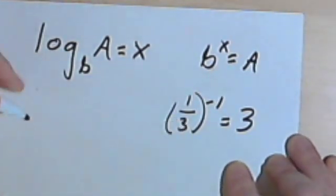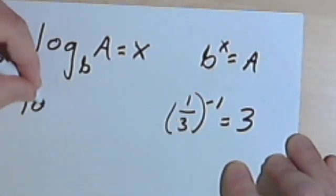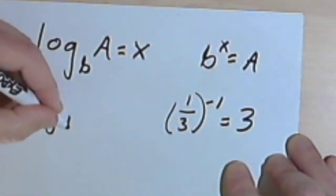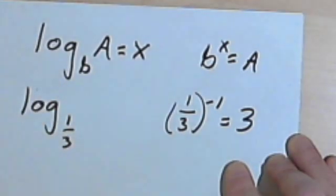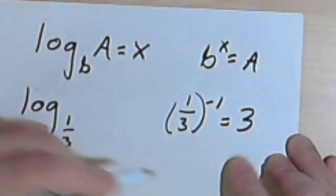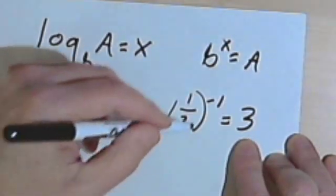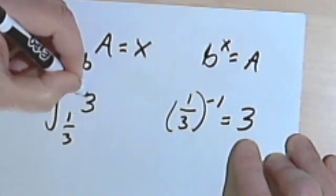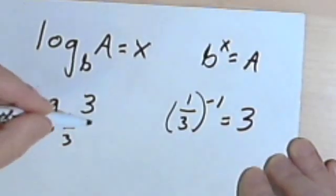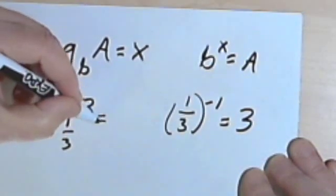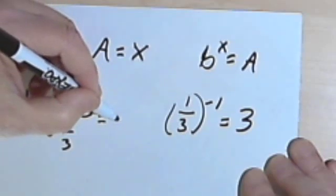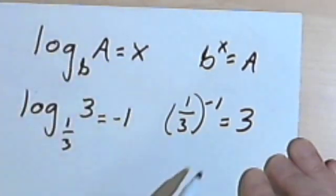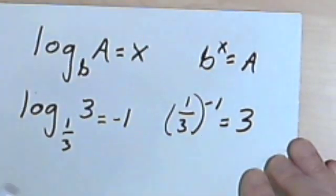So that means my base is 1 third. So I've got this fraction as a base. And my argument is what that whole exponential equation equaled. So the log base 1 third of 3 equals negative 1, because my exponent was negative 1.